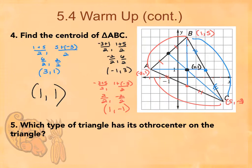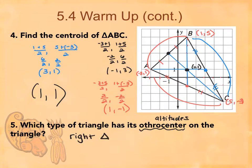Number five says: which type of triangle has an orthocenter on the triangle? Orthocenter means altitudes. And altitudes are just like perpendicular bisectors — the in, on, out. The on would be the right triangle. More specifically, where is it on a right triangle? At the right angle.